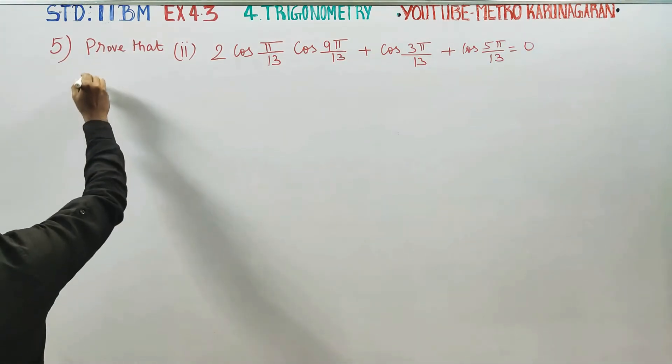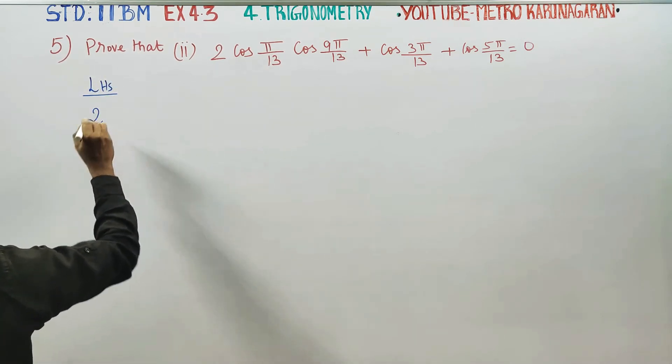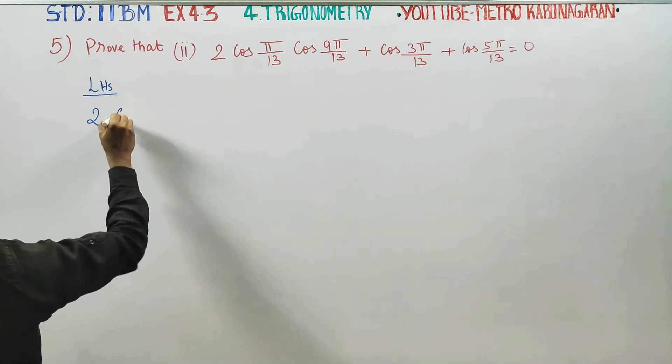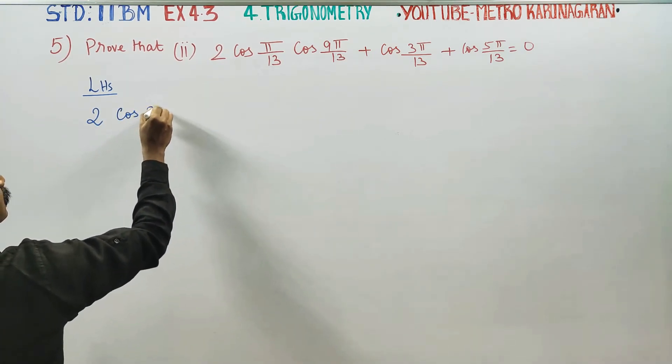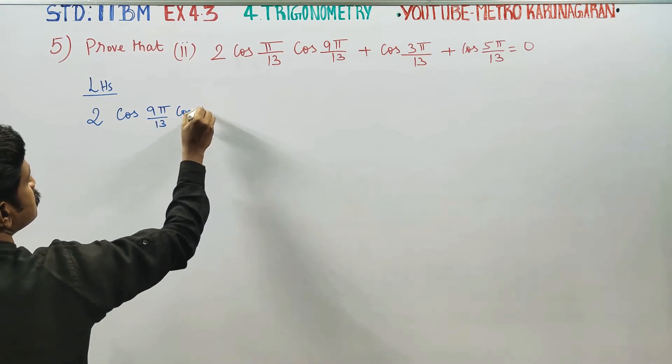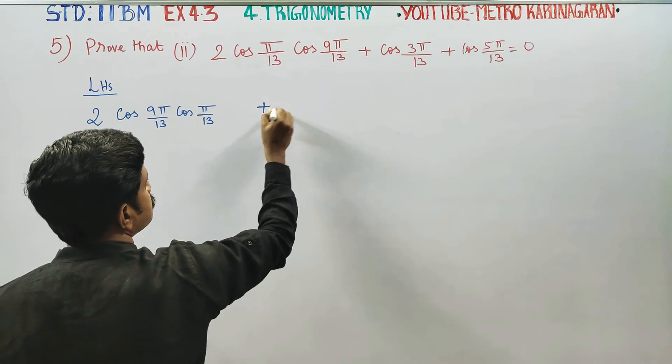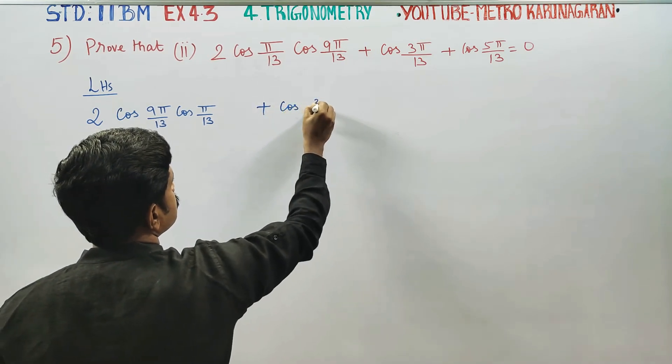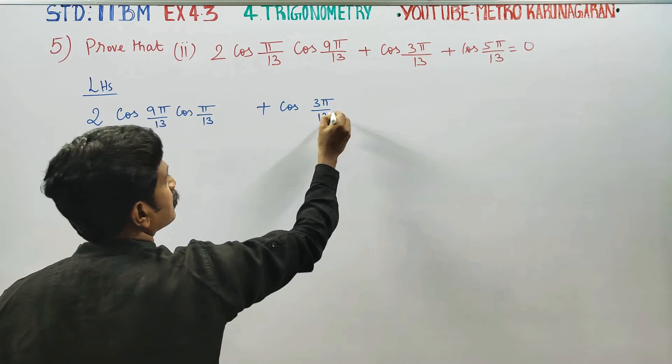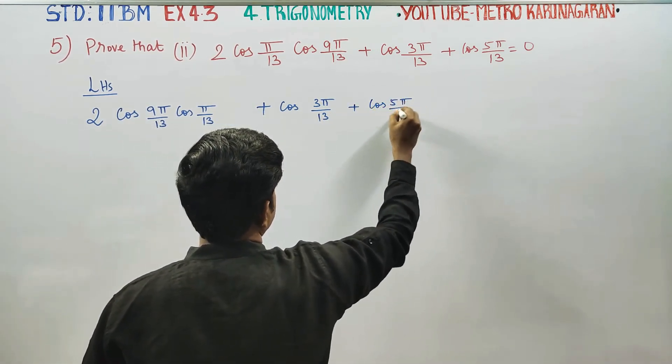First I will start my LHS. My LHS is two times cos 9 pi by 13, cos pi by 13, plus cos 3 pi by 13, plus cos 5 pi by 13.